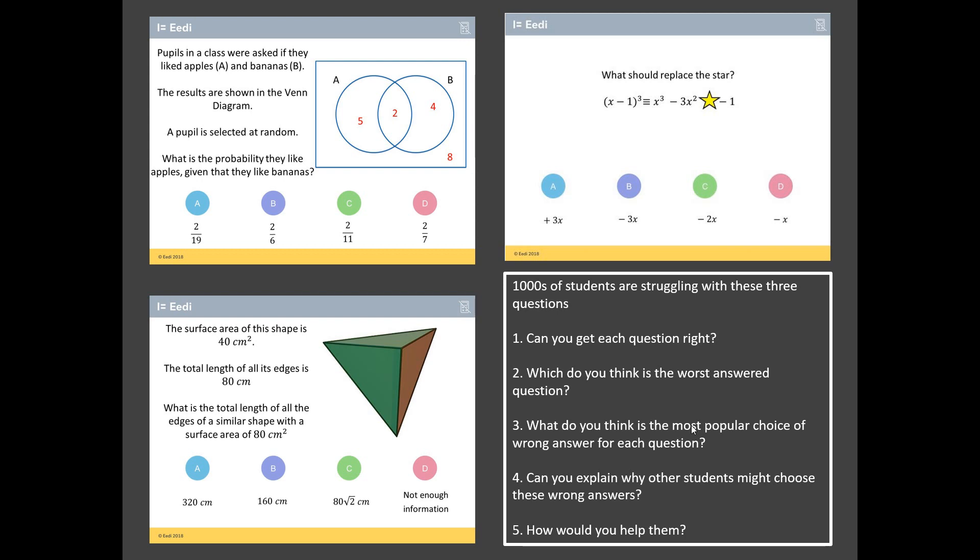I've got five challenges for you. First, can you get each question correct? That's easier said than done, as thousands of students are struggling with these. Second, what do you reckon the worst answered question is? Then, can you predict for each question what the most popular choice of wrong answer is?